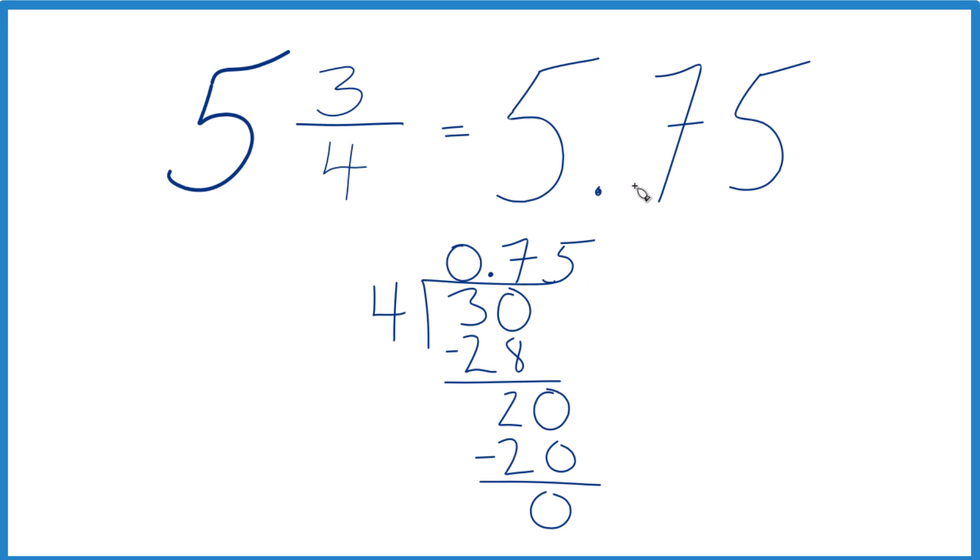5 and 0.75 gives you 5.75. So in answer to our question, the fraction 5 and 3 fourths equals the decimal 5.75.